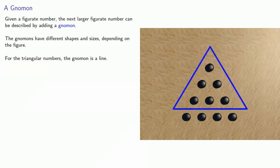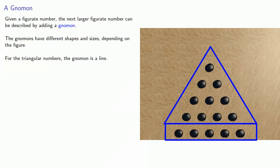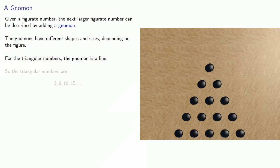And I can make the next larger triangular number by adding a gnomon, a line, and that gets me the next triangular number, ten. And I can take my triangular number ten and add a gnomon, a line, to get the next larger triangular number, fifteen. And we can continue this as far as we want.